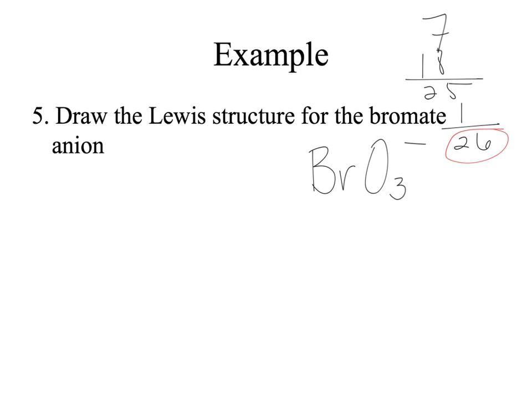I'll find my least electronegative atom. Bromine is a halogen, but electronegativity decreases as we go down the table, so bromine is less electronegative than oxygen and will be our central atom. We put the three oxygens around bromine and connect each with a bond. That uses six electrons — two per bond — leaving us with 20 electrons to distribute.